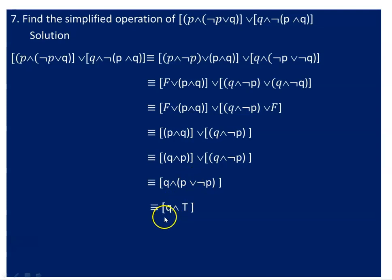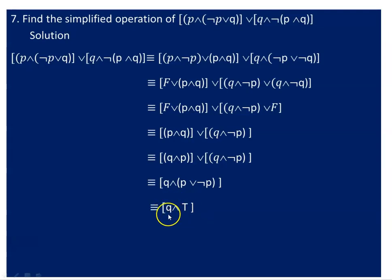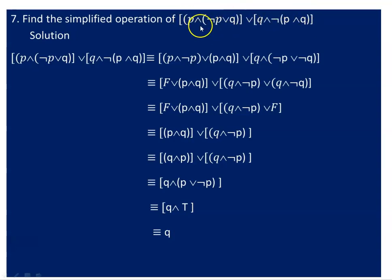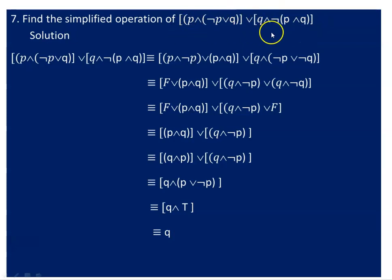Using the identity property, true and true is true. False is true, false is true, and true is true. When you consider the true value combinations: true and false is true, and true is true. This compound proposition simplifies to Q.